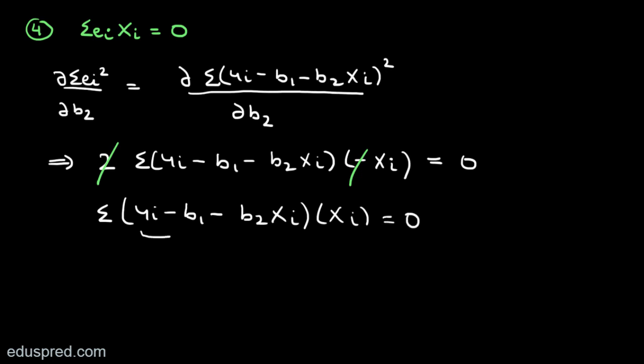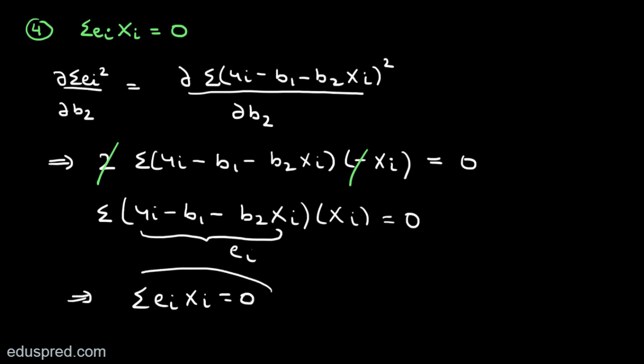This expression is nothing but Eᵢ, which implies that summation Eᵢ multiplied by Xᵢ equals 0. This result holds by construction — the OLS method is constructed such that while solving for the formula to calculate B2, we get this particular result in between.